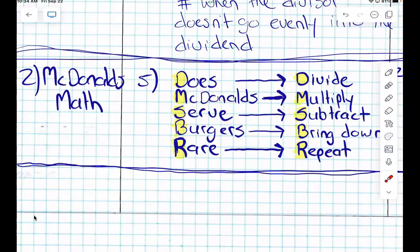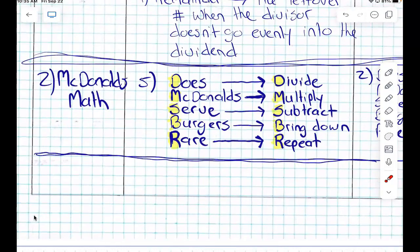And what does the does in does McDonald's serve burgers rare stand for? Divisor. What does the M in McDonald's stand for? Multiply. What does the S in serve stand for? Subtract. What does the B in burgers represent? Bring down. What does the R in rare represent? Repeat. So that's our process for long division, yes? Yes.